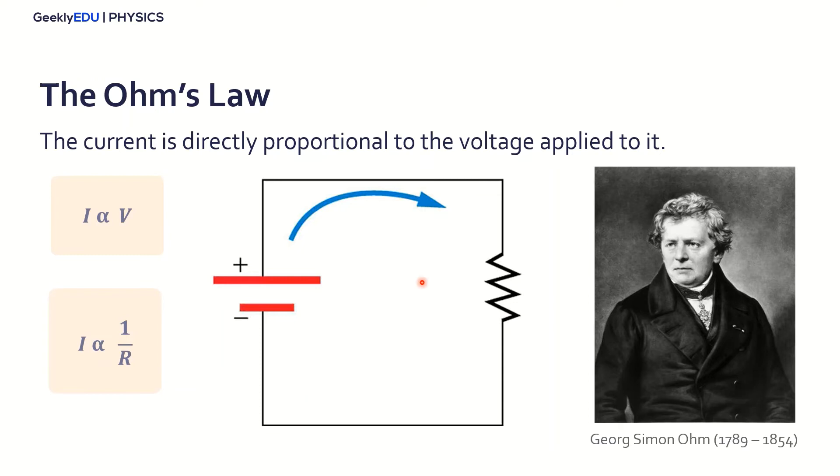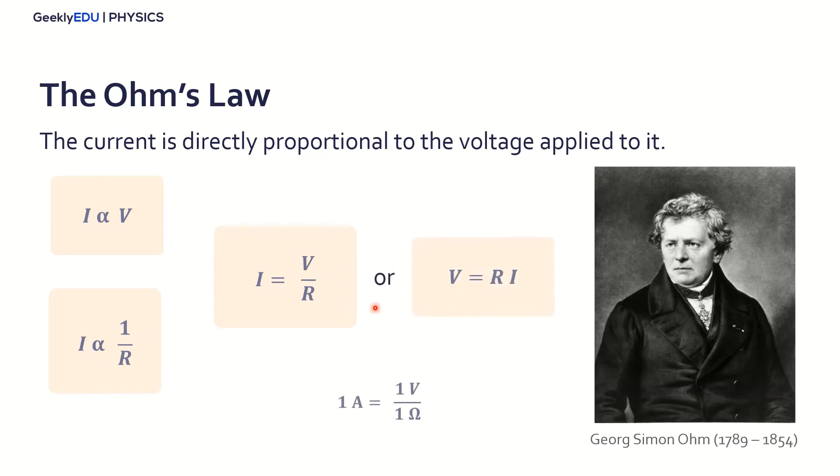And it's also inversely proportional to the resistance in the circuit. So by this, he developed Ohm's Law. So the electric current is actually the voltage divided by resistance, or you can also write it like this: the voltage is actually the resistance times the electric current, V = IR. And for this thing here, the current, we give the unit of 1 ampere. So 1A is actually 1V divided by 1 ohm.